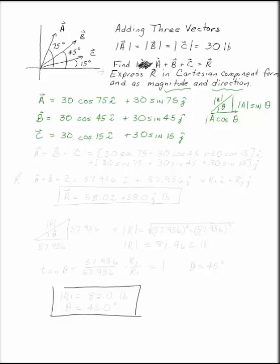To add up three vectors that are all in Cartesian component form, add the i's, add the j's. So A plus B plus C is equal to 30 cosine 75 plus 30 cosine 45 plus 30 cosine 15 in the i direction, and the same thing in the j direction. You can plug all that into your calculator to show that the resultant A plus B plus C is 57.956i plus 57.956j.